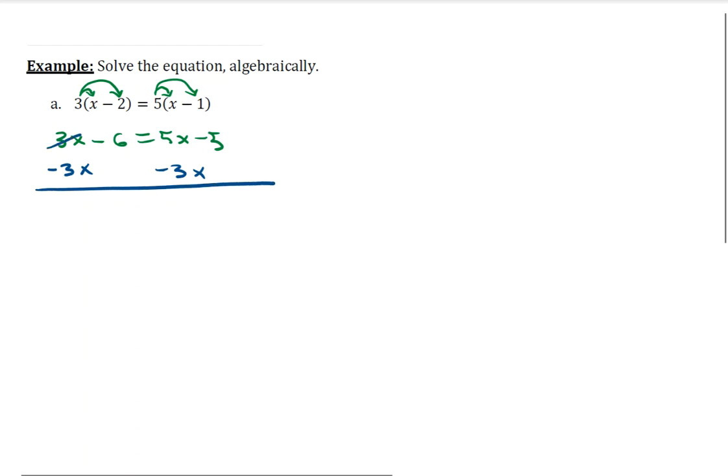What happens on the left is these cancel. We get negative 6 remaining. And on the right, we do 5x minus 3x to get 2x. And of course, we'll also have the minus 5 left over on the right.